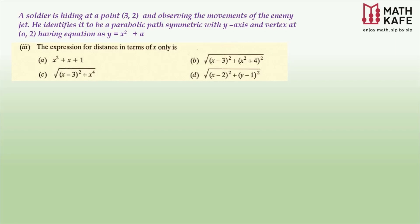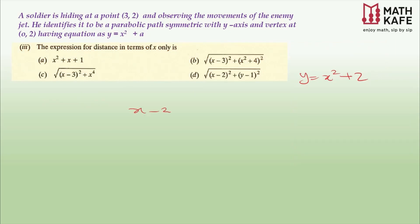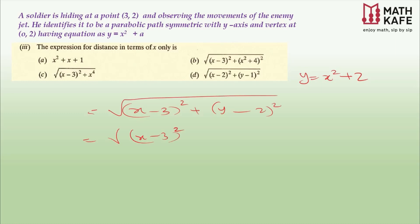The third question asks for the distance expression in terms of x only. We substitute y = x² + 2 into the distance formula. The (y − 2) term becomes (x² + 2 − 2) = x². So the distance becomes √[(x − 3)² + (x²)²] = √[(x − 3)² + x⁴]. This is option C: √[(x − 3)² + x⁴].